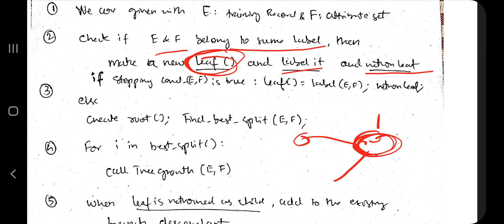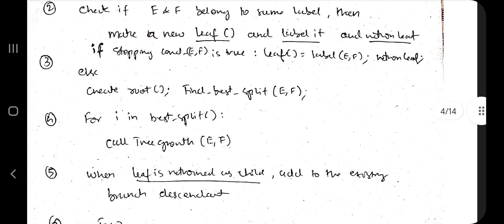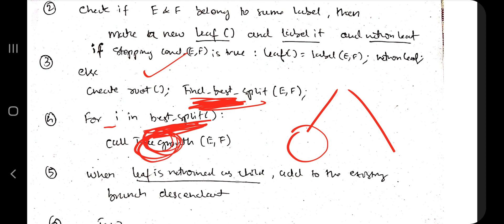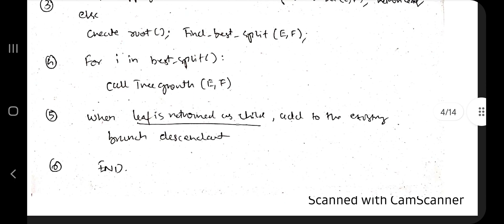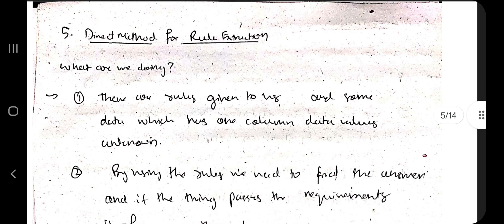To continue the Decision Tree algorithm: if the stopping condition is met, create a leaf node, label it, and return. Otherwise, find the best split — that becomes the root. For each best split found, call the tree-growth function (the same algorithm recursively). The returned leaf is added to the descendants. This recursive splitting continues until all records fit into one class.